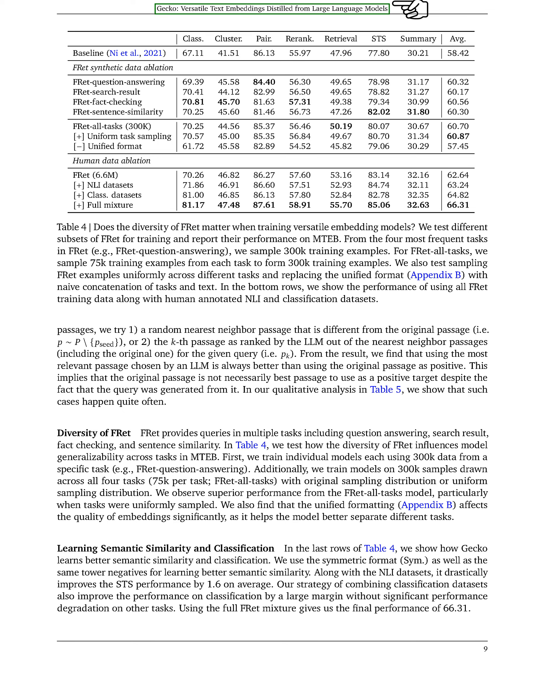We explore the diversity of FRET. FRET offers queries for various tasks such as question answering, search results, fact checking, and sentence similarity. We conducted tests to see how the diversity of FRET impacts the model's ability to perform well across different tasks in MTEB. We trained separate models using 300k data points from a specific task, like FRET question answering, and also trained models using 300k samples taken from all four tasks, 75k per task, with either the original or a uniform sampling distribution.